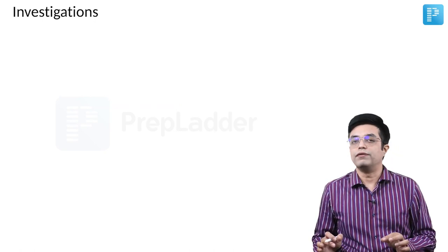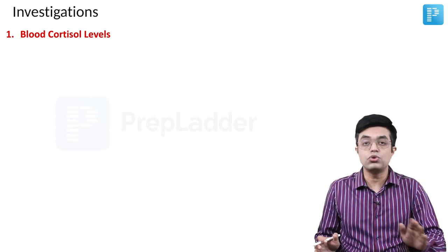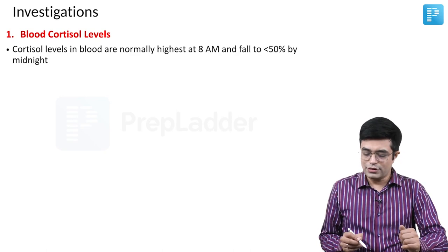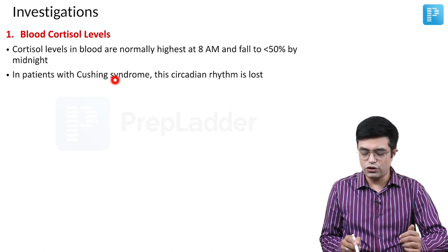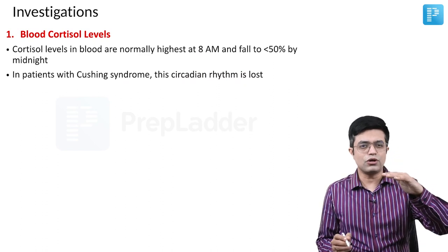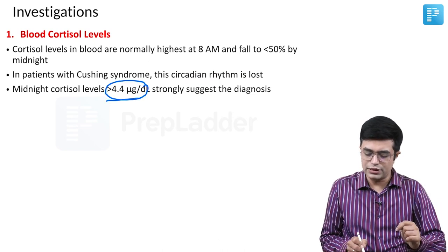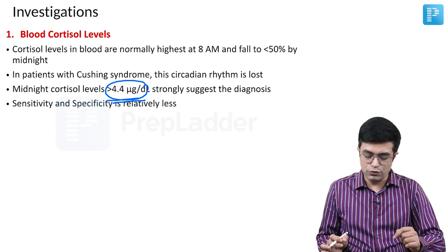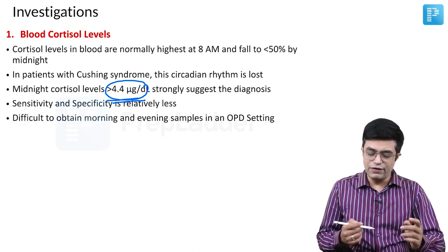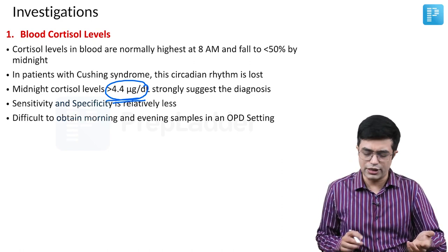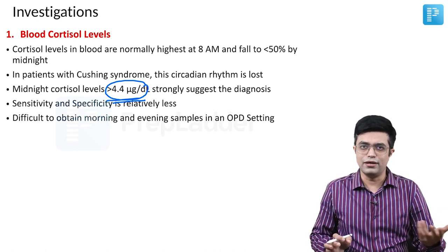For investigations, the first screening test is blood cortisol levels. Cortisol is normally highest at 8 am and falls to less than 50% by midnight; in Cushing syndrome this circadian rhythm is lost. A midnight cortisol above 4.4 mcg/dL strongly suggests the diagnosis, but sensitivity and specificity are only 60–70%, and it requires hospital admission. Therefore, blood cortisol levels are no longer the standard screening test, though conventionally mentioned as first-line.